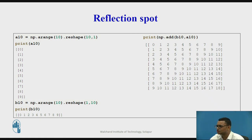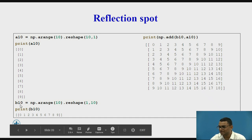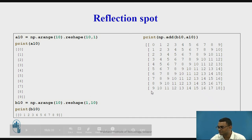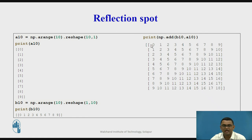So here I have changed the shape of array A10 to having 10 rows and 1 column, and the shape of array B10 to having 1 row and 10 columns, which gives us the result as the arrangement of the array in the matrix.